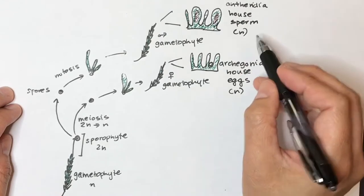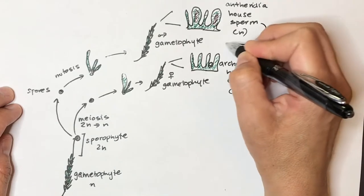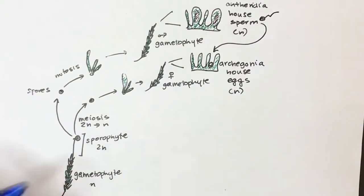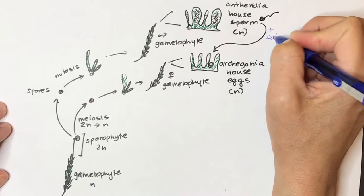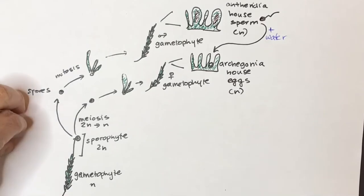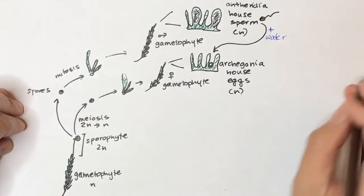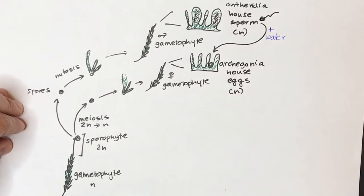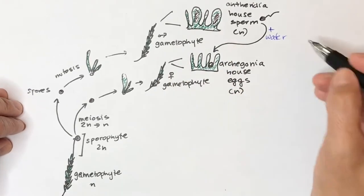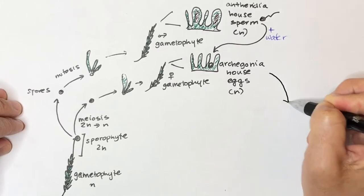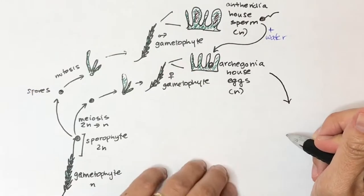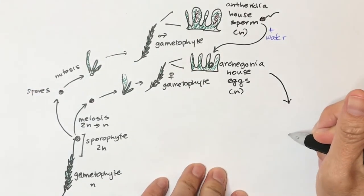This sperm is going to travel to an archegonium. This is flagellated sperm that needs to travel in water. So I'm going to say it needs water plus water. It's going to be able to travel and fertilize the eggs in the archegonium of a female gametophyte. So this fertilization is going to occur in the archegonium. And so the female gametophyte is going to actually grow the sporophyte right out of her tip where her archegonia are. And so in this little archegonium, we're going to grow a whole new sporophyte. So I'm just going to draw that little part of it here.